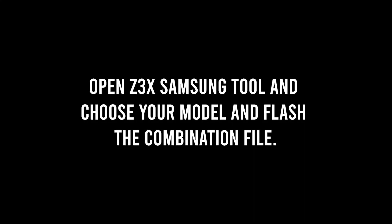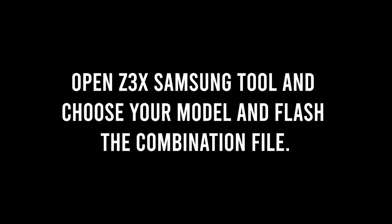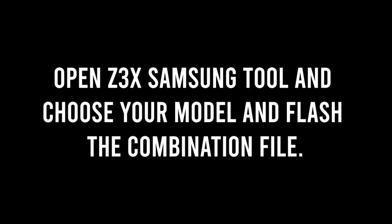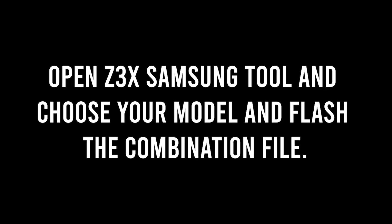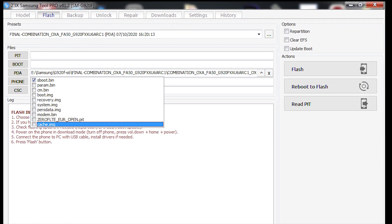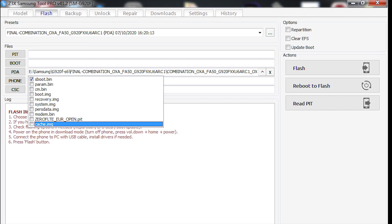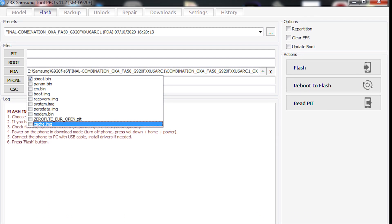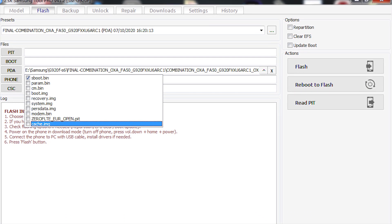Open the Z3X Samsung Tool, choose your model, and flash the combination file. Make sure you untick everything apart from sboot and flash the file. After flashing, your phone will either be stuck on the Samsung logo with some green writing on the top, or it will go to the main home screen.